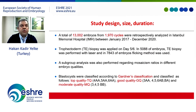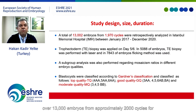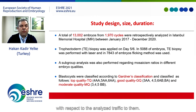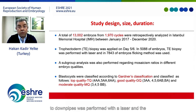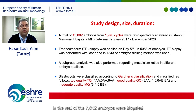In our study, over 13,000 embryos from approximately 2,000 cycles were retrospectively analyzed. Trophectoderm biopsy was applied on day 5 to 88 embryos. Trophectoderm biopsy was performed with laser in some embryos, and the remaining 7,842 embryos were biopsied using only the flicking method.